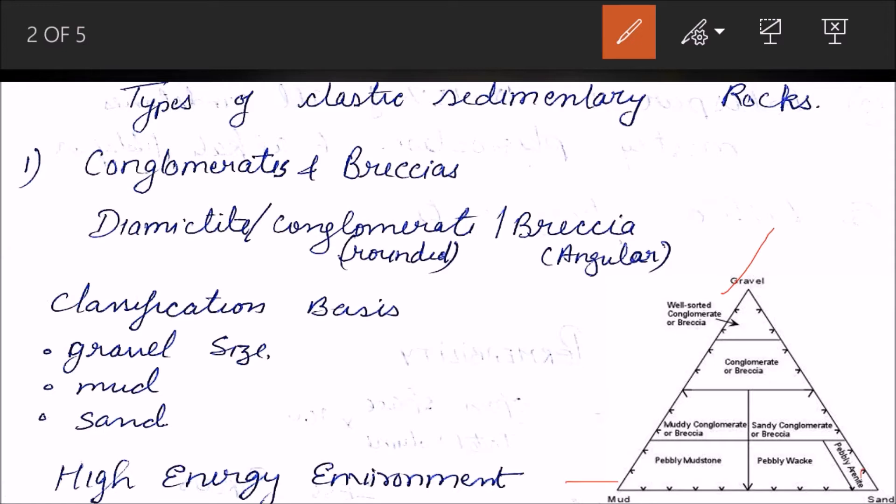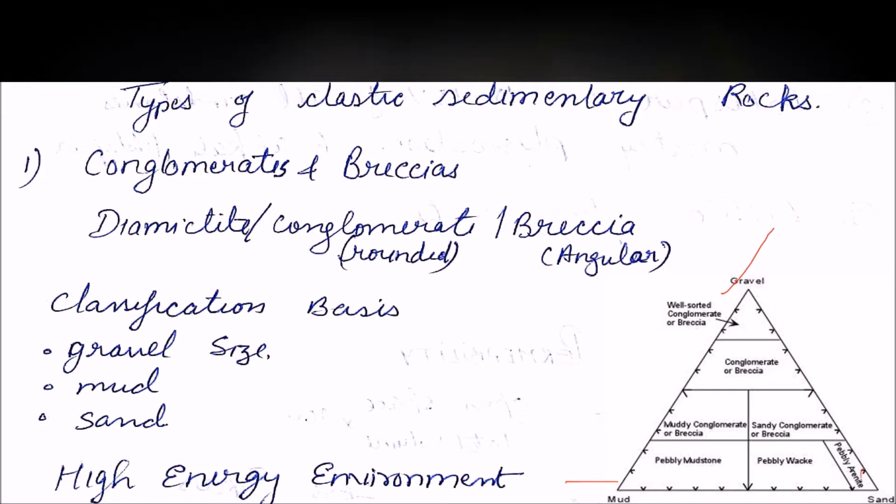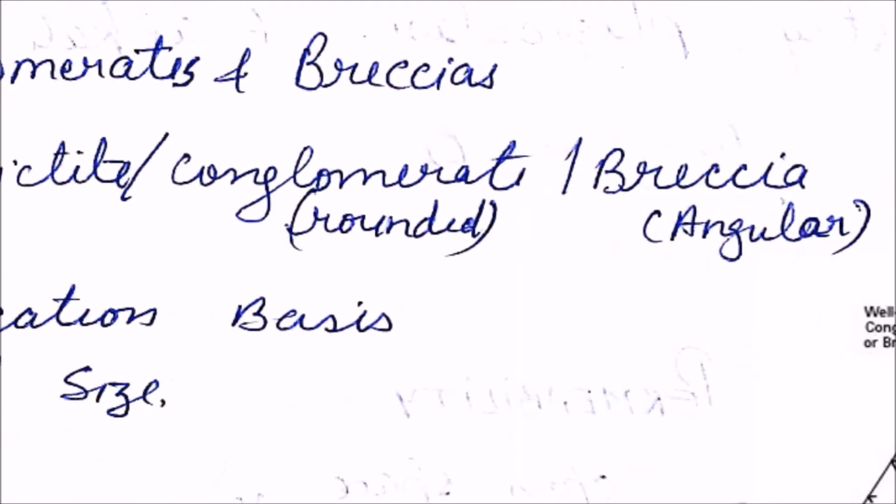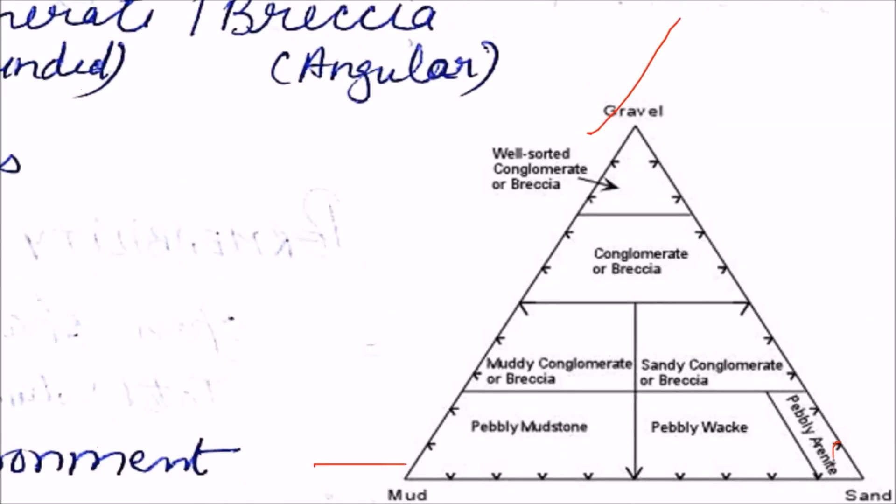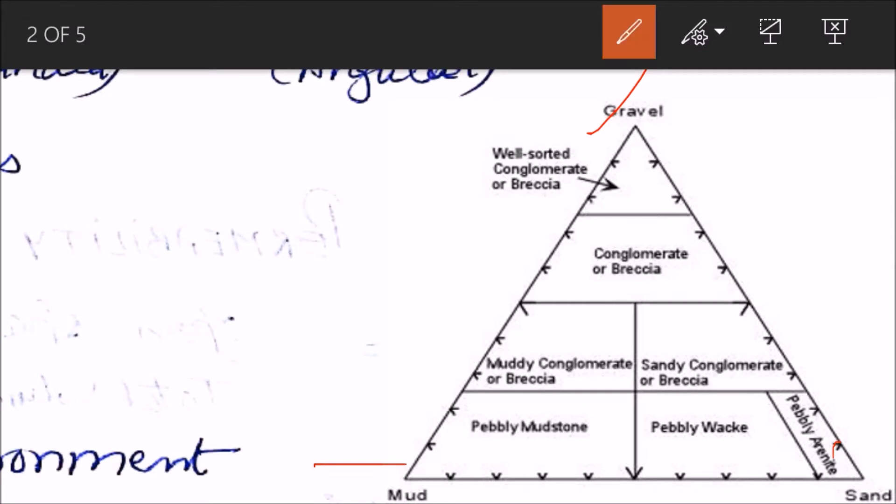Now all the conglomerates can be divided on this basis. If you zoom into this triangle, we see here, this region here will contain all the conglomerates - well sorted conglomerates and breccias here.